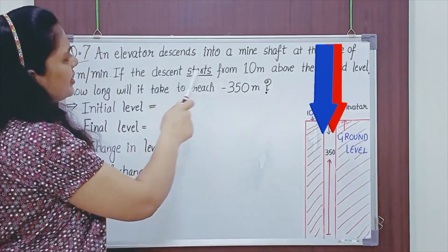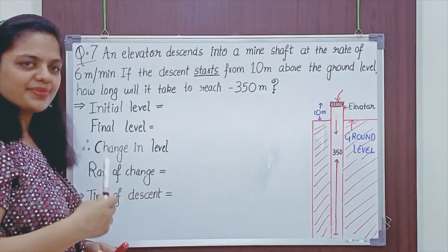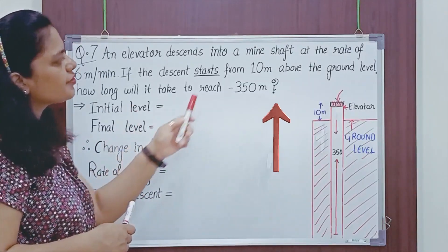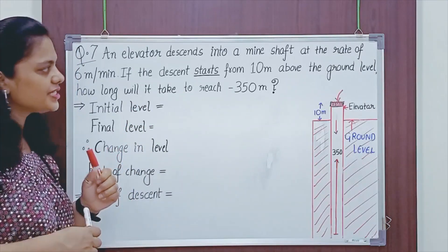It says, an elevator descends into a mine shaft at the rate of 6 meters per minute. If the descent starts from 10 meters above the ground level, how long will it take to reach minus 350 meters?